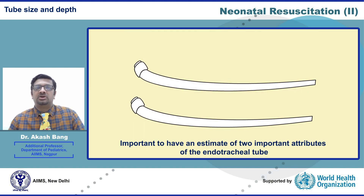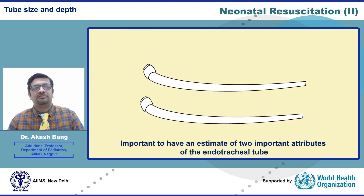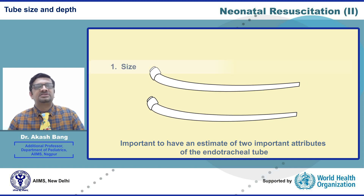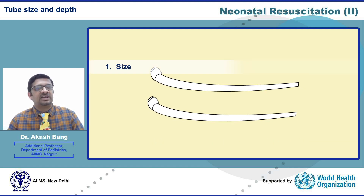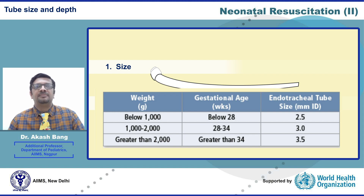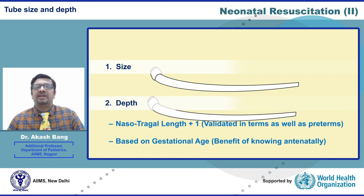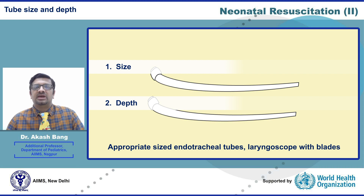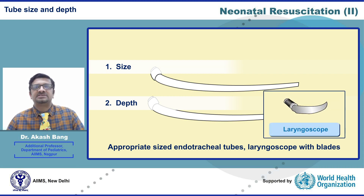Before the actual procedure of intubation, it is important to estimate two important attributes of the endotracheal tube: the appropriate size of the tube and the depth of insertion. Standard tables based on gestational age and weight can be useful guides, with the benefit of being known antenatally. Additionally, actual measurement of nasotracheal length may help guide insertion depth.